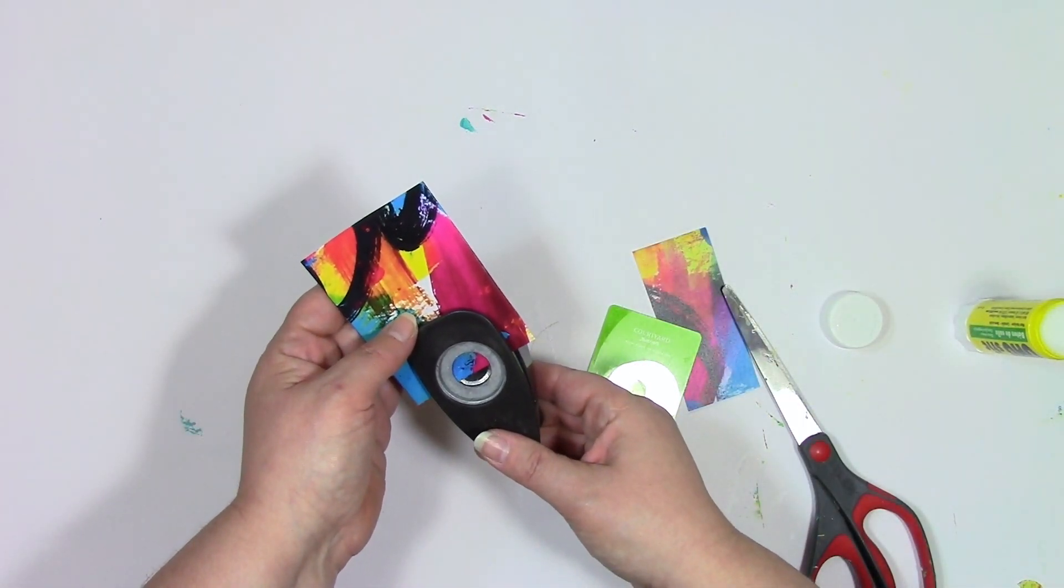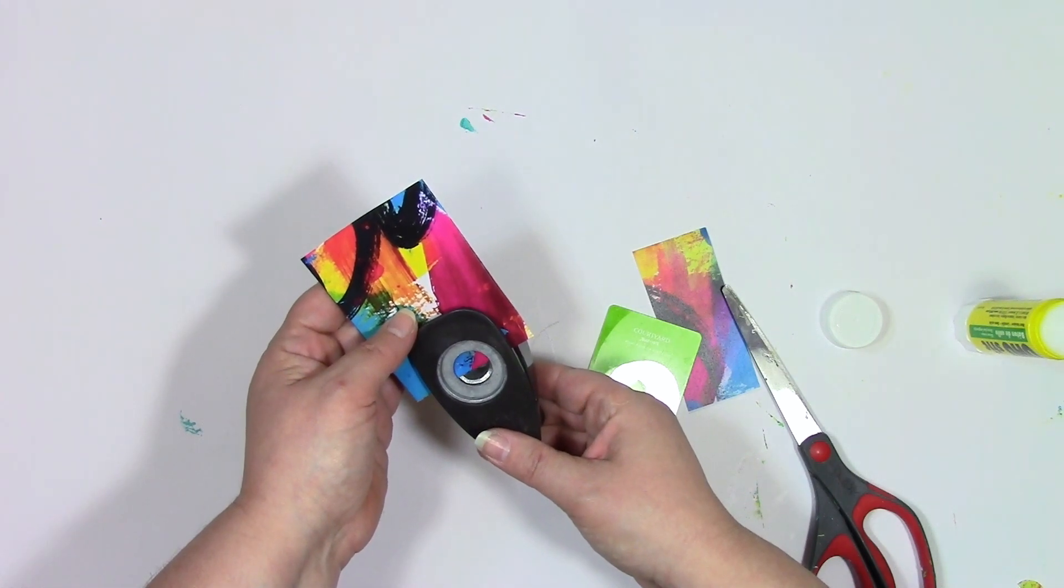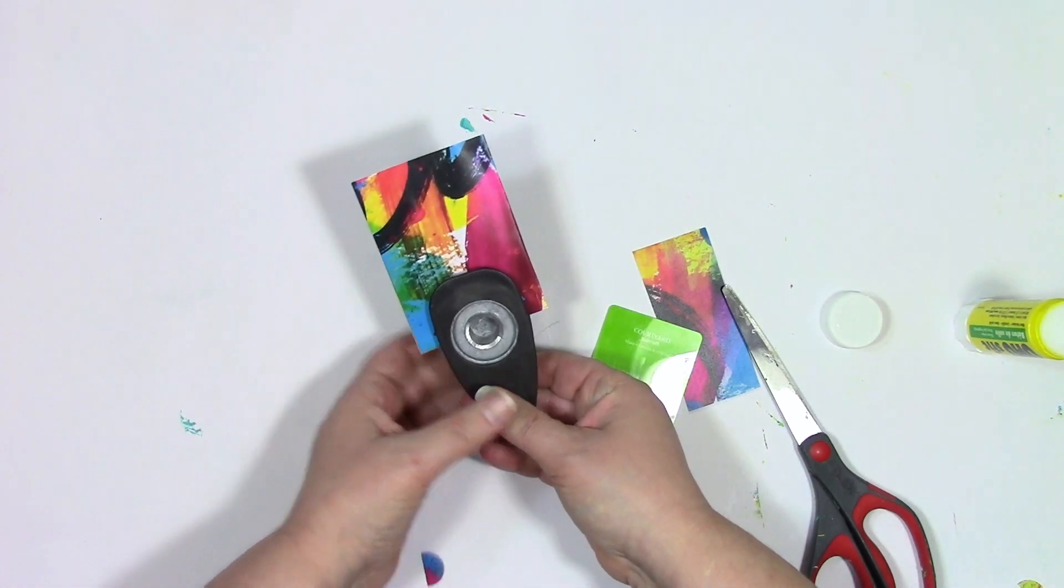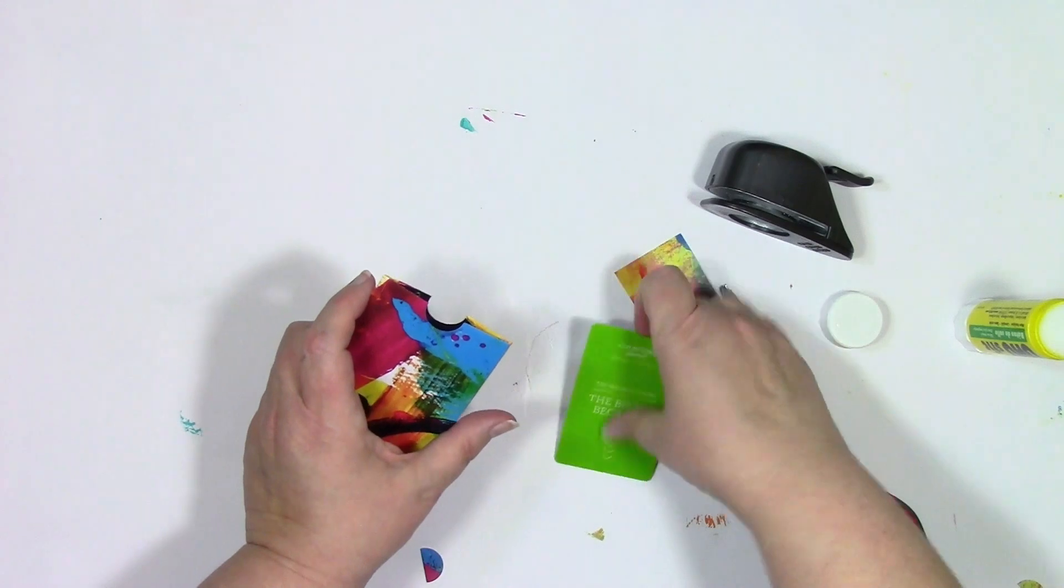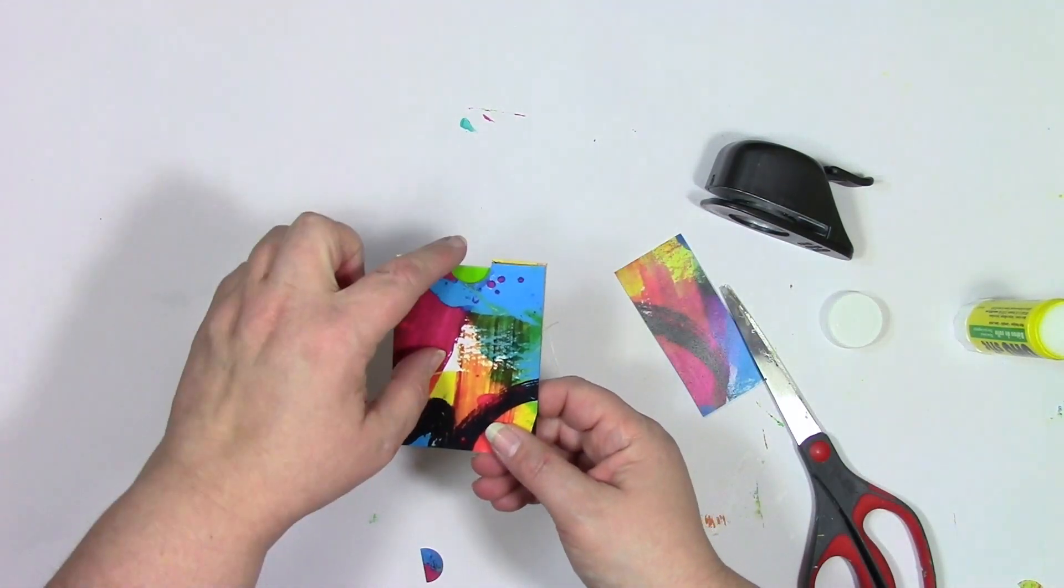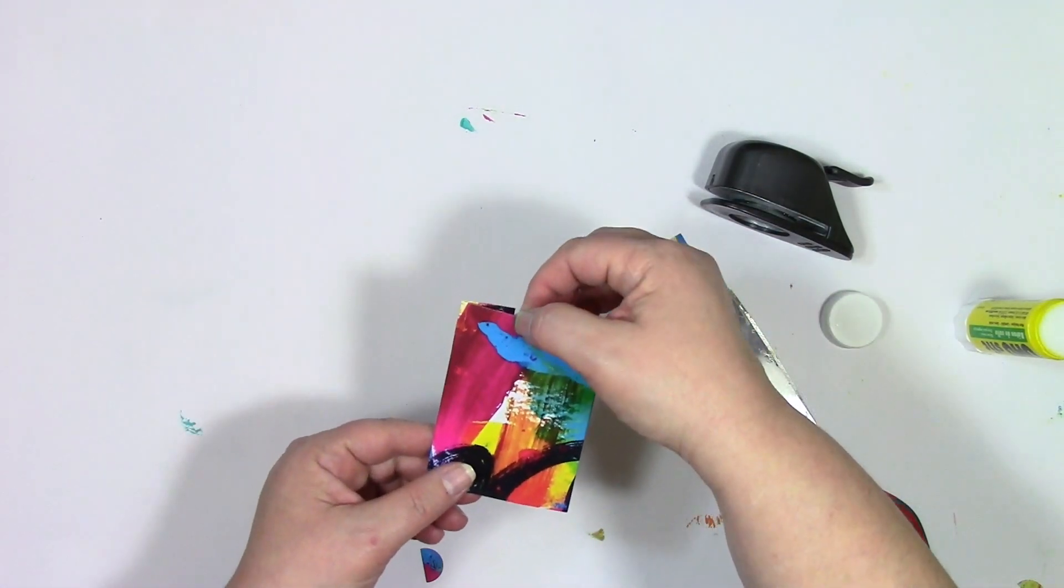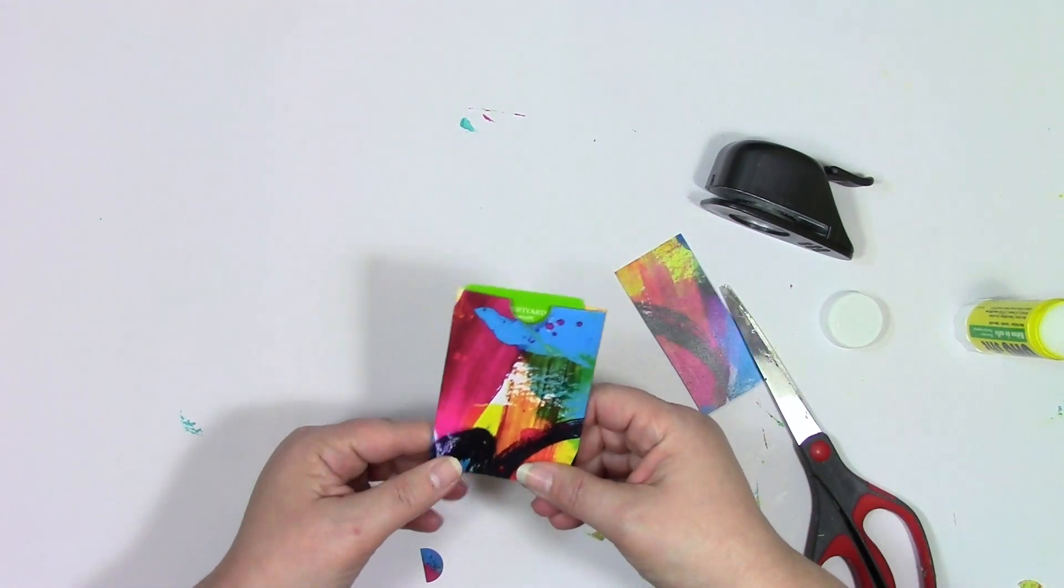Now I'm going to put a little punch here using a circle punch. This one's a three-quarter inch punch, I believe. I'm just going to cut that half circle out. Could I have cut that with scissors? Absolutely, I could have. I just cut really junky circles. So that's why I'll use a punch for that.